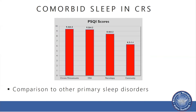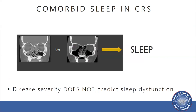Comparing CRS to primary sleep disorders such as OSA and narcolepsy, CRS shows at least equal or higher prevalence of sleep dysfunction using the PSQI score. This was quite surprising. Does this difference in sleep quality relate to overall disease severity or amount of nasal obstruction? Looking at disease severity — comparing CT scans with much more chronic inflammation and opacification — disease severity does not appear to predict sleep dysfunction, arguing against the concept that nasal obstruction is driving these differences in sleep.